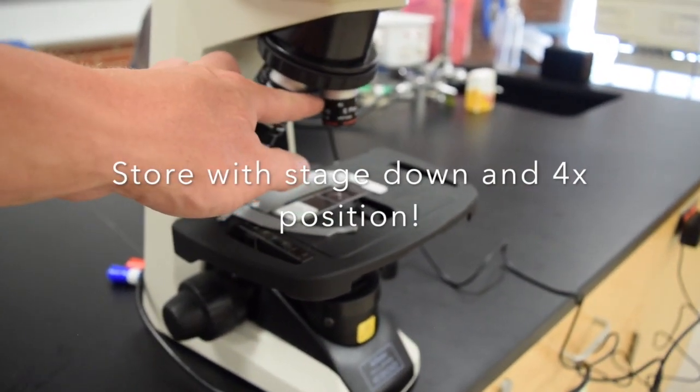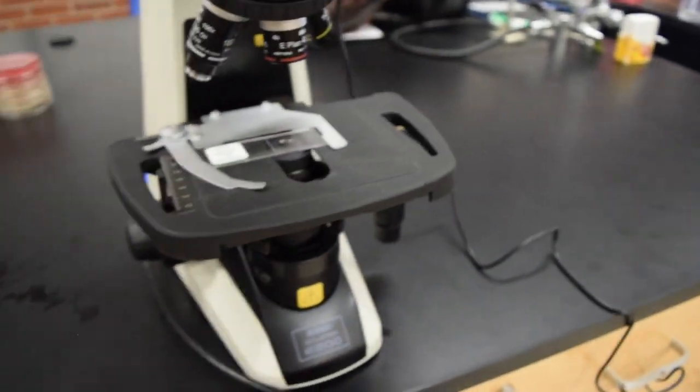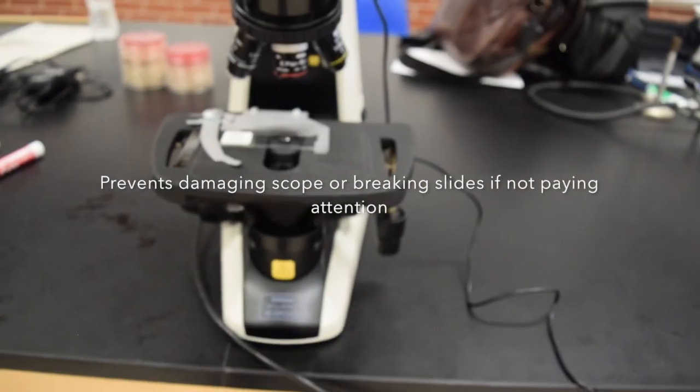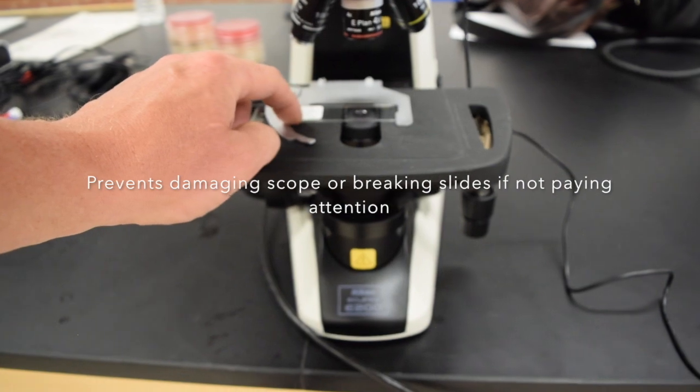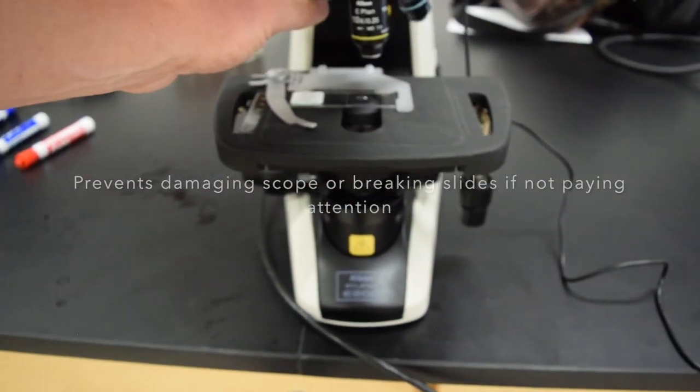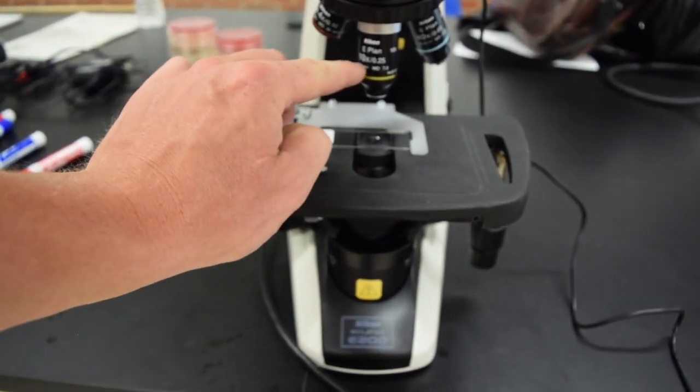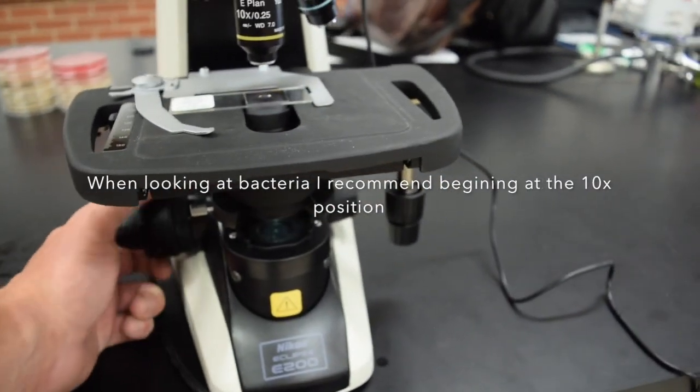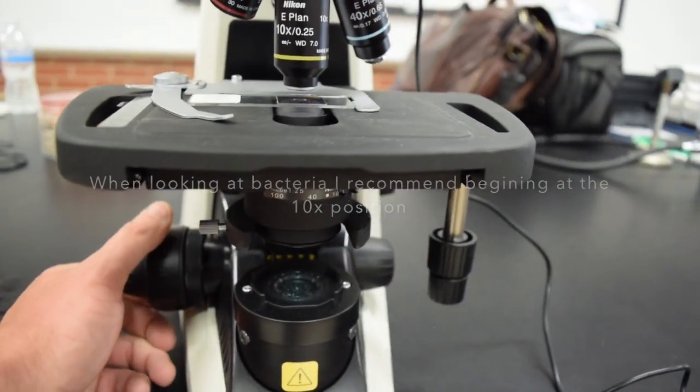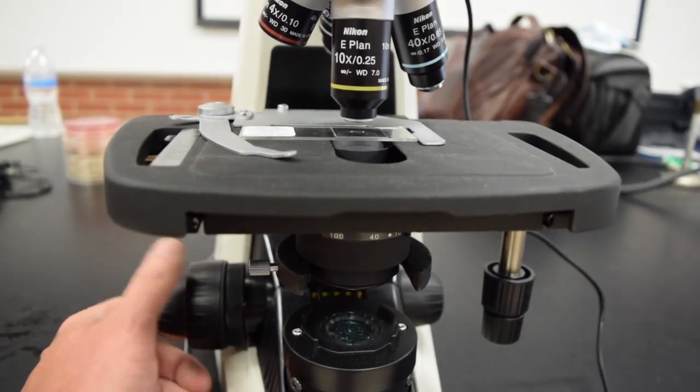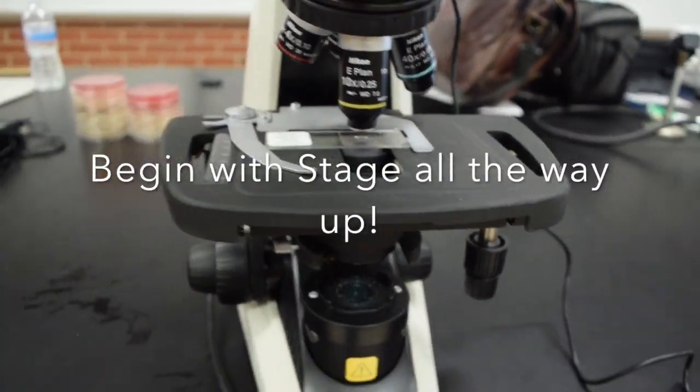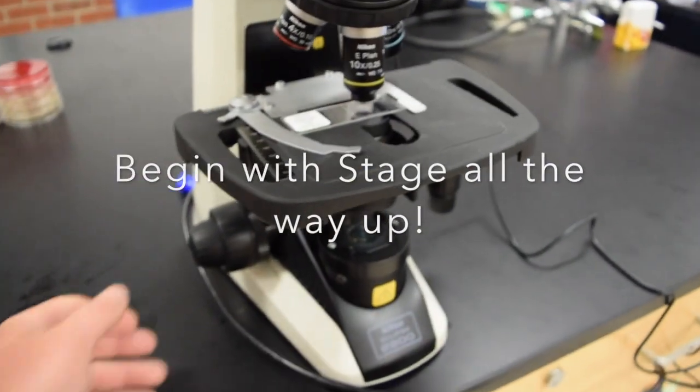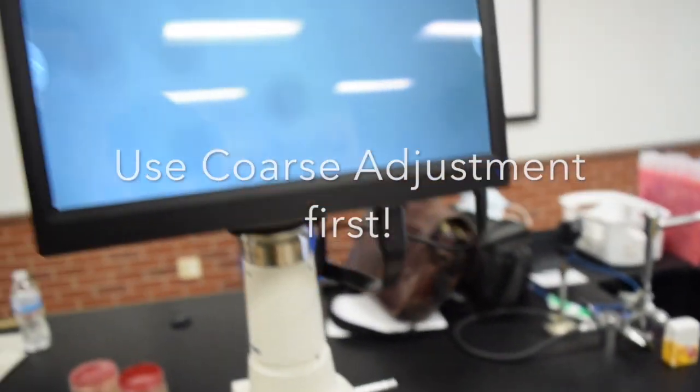When we start, we're going to start at low power. This is a bacterial shape slide, so I'm going to start at the 10x position and move the stage all the way up. The stage is all the way up and there's a gap between the slide.